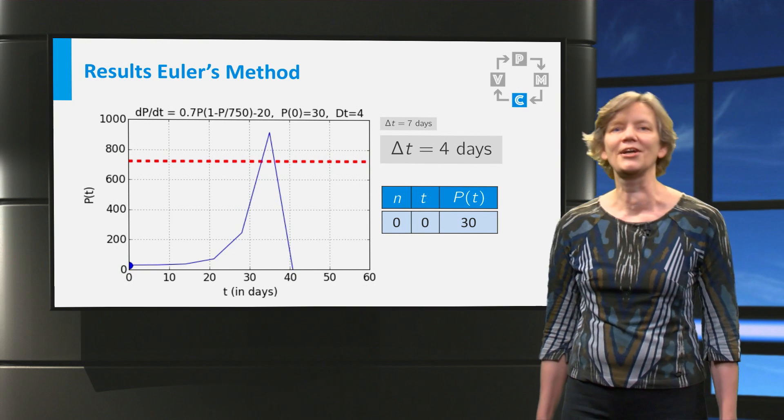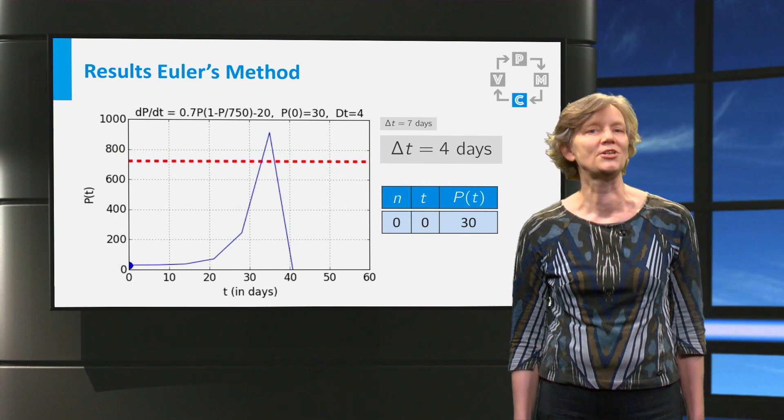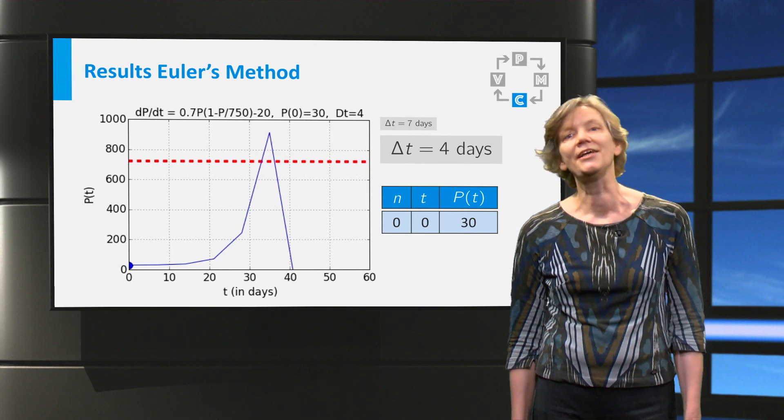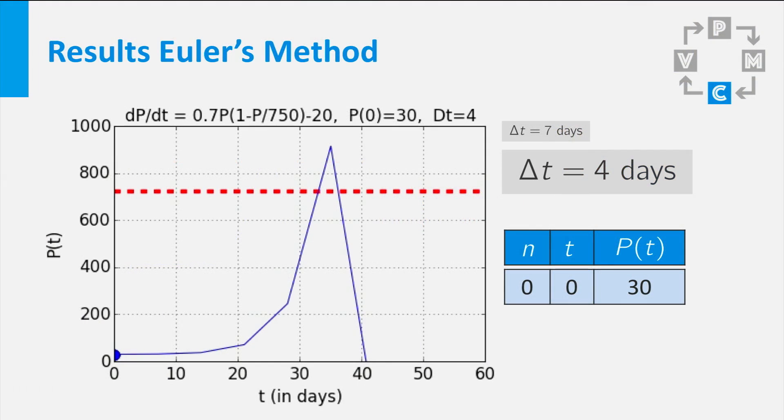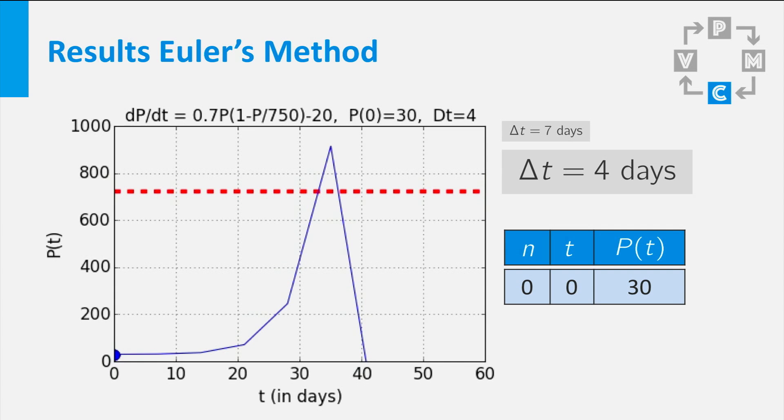So the results for a step size of 7 were not okay. Let us now try a delta t of 4 days. We start again for t equal to 0 with 30 rainbow fish.